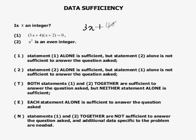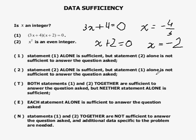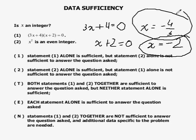So it could be that 3x plus 4 is equal to zero, in which case x is negative four-thirds, or it could be that x plus 2 is zero, in which case x is minus 2. So it could be that x is an integer, or it could be that x is not an integer. So number one is not sufficient.